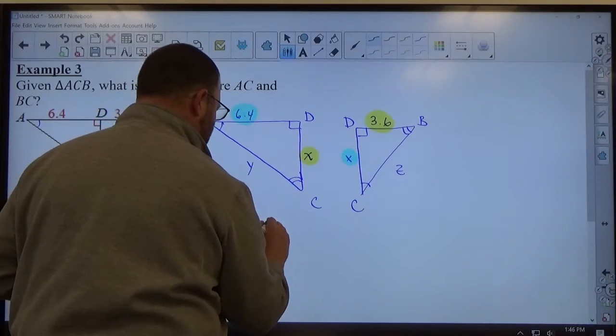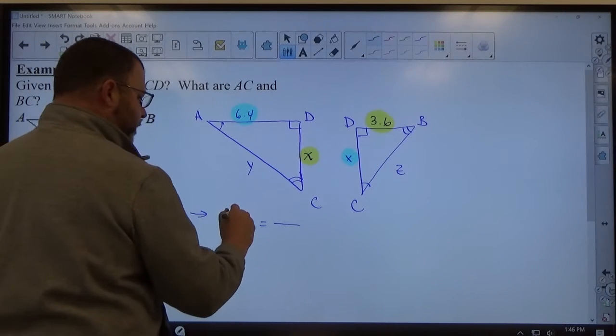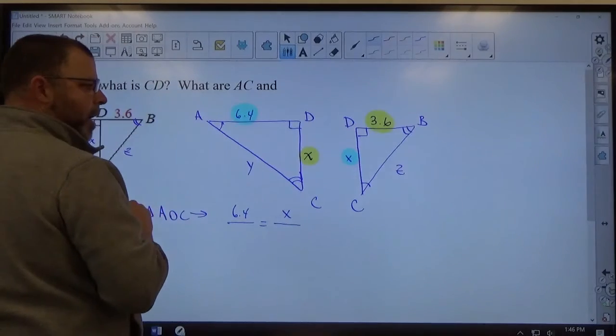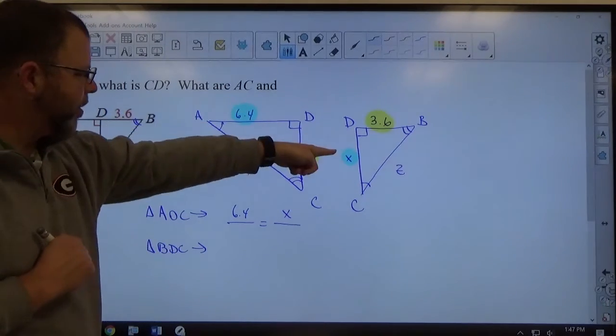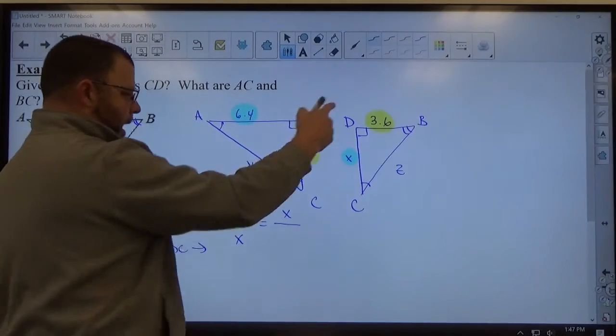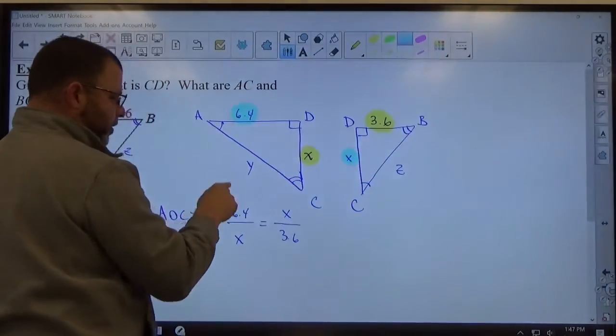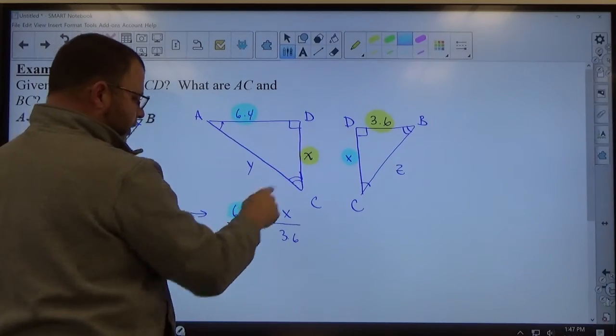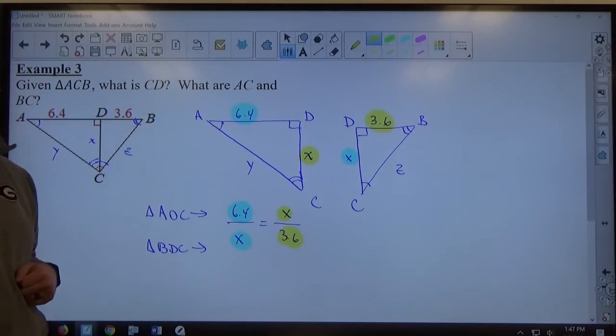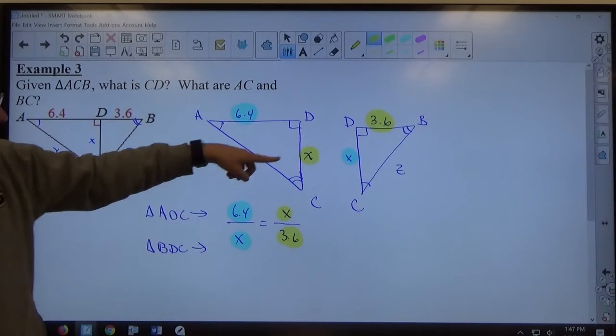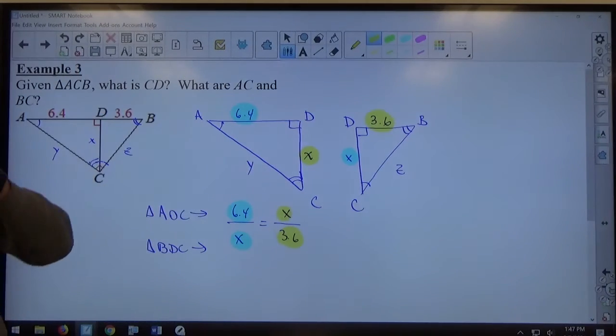So, with that in mind, if I set up a proportion here to represent what's going on, and I put the measurements from ADC on top, I'm going to put 6.4 and X on top, I need to put the measurements from triangle BDC on the bottom, but in order of similarities. So, 6.4 matches up to X, and X matches up to 3.6. And just to highlight where these things are coming from, so there's no confusion, because we've got a couple X's, this is this 6.4, this is this X, this is this X, and this is this 3.6. So, 6.4 from the left triangle over X from the right triangle equals X from the left triangle over 3.6 from the right triangle. So, left and right-hand side.